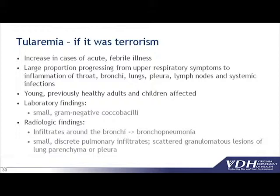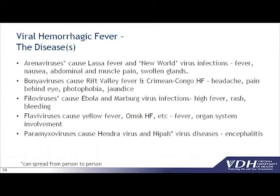Viral hemorrhagic fever is not one disease but really dozens of diseases. All of them live in animals or insects, and the viruses occur in parts of the world where these animals and insects live — humans have to contact these animals and insects to get infected. Some are spread person to person — the arenaviruses, filoviruses, and Nipah virus can be spread person to person, but not all of them. These diseases are very rare in the United States, occurring mostly in Africa, so we would expect to see them as travel-related diseases. They're not going to be easy to spread with good precautions in healthcare — preventing needle sticks, not sharing needles between patients, and using barrier precautions should prevent spread.